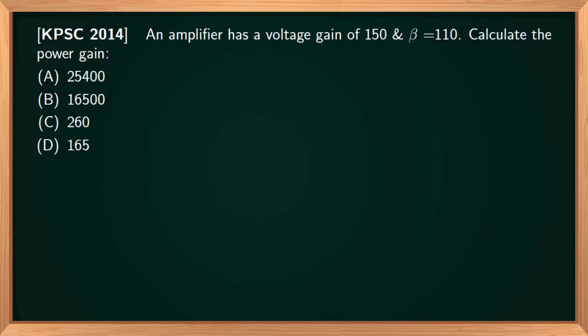An amplifier has a voltage gain of 150 and beta equal to 110. Calculate the power gain. Power gain equals P out by P i, output power by input power. This ratio is called power gain.